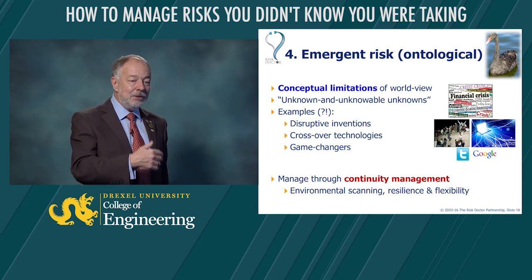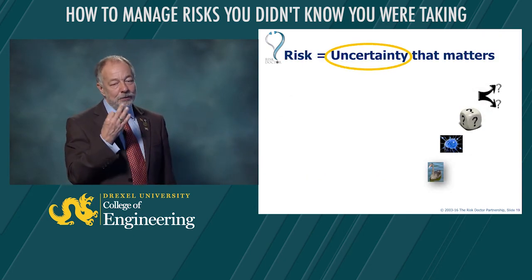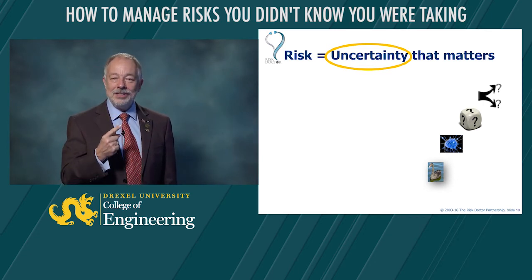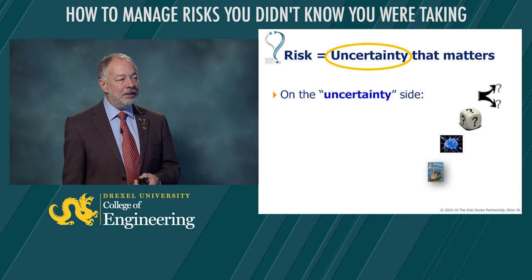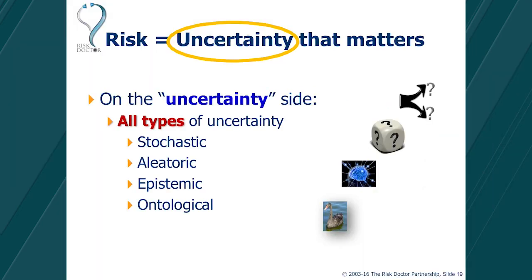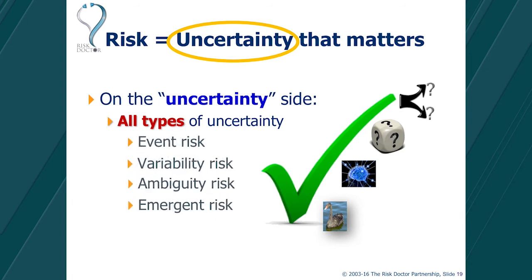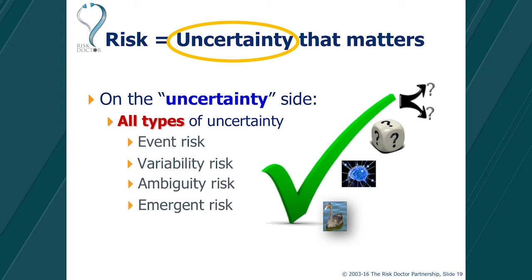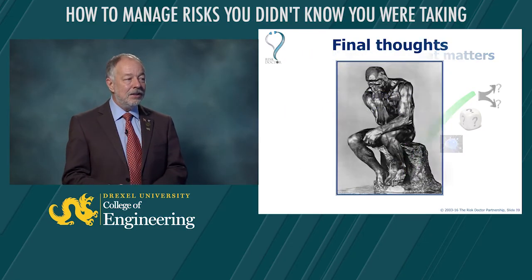So there are things we can actually do to manage the things we can't even imagine, by preparing in advance responses to deal with the effect of something we can't currently see. On the uncertainty side, we need to cover all four types of uncertainty — stochastic, aleatoric, epistemic, and ontological. Or if you can't remember those names: uncertain future events, variability in things we plan to do, ambiguity about things where we have some lack of knowledge, and emergent risk that will come out of the blue from a place we can't imagine. All of these things are uncertainties that need to be managed.